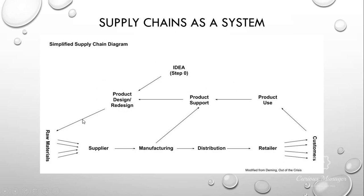The product support side isn't talked about much, but it's gaining relevance as companies use a more 360-degree method to better understand how their products are used, especially when one product is trying to satisfy multiple markets. For most of this class, we're only going to focus on the bottom part — the actual product going from raw materials to the customer. I'm providing this broader view for your information and curiosity; if you want more detail, please let me know.